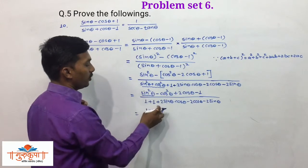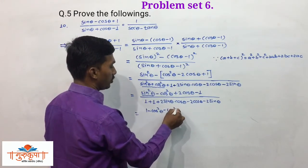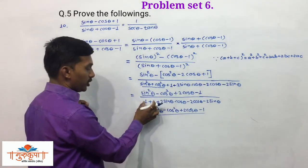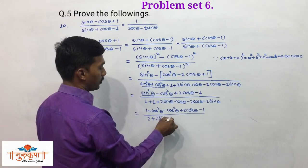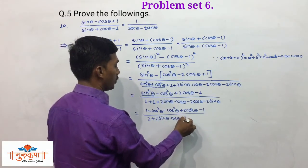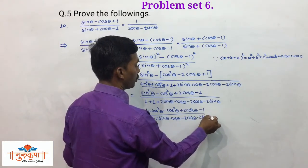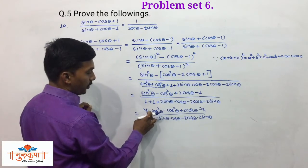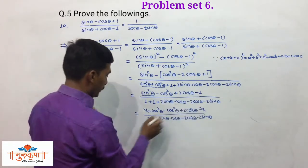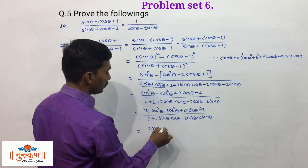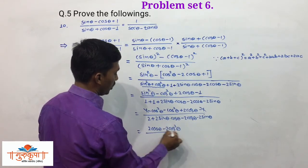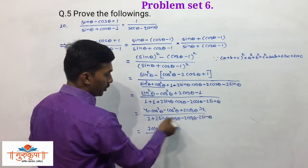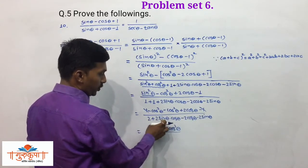Replacing sin²θ by (1 - cos²θ), the numerator becomes: 1 - cos²θ - cos²θ + 2cosθ - 1, which simplifies to 2cosθ - 2cos²θ. The denominator is 2 + 2sinθcosθ - 2cosθ - 2sinθ. The +1 and -1 cancel. You can take 2 as common from all four terms in the denominator.